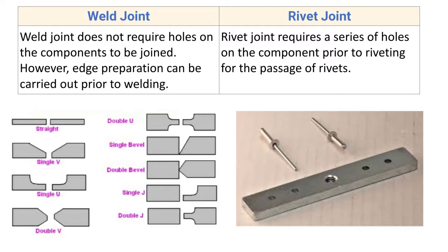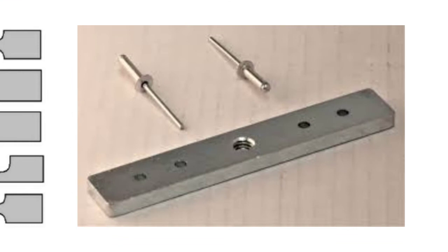For rivet joint, it requires a series of holes on the component prior to riveting for the passage of rivets. The series of holes has to be drilled over the component to be joined.